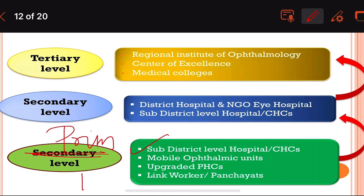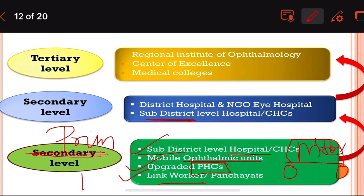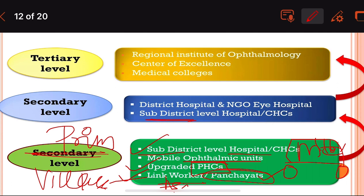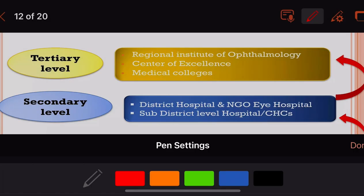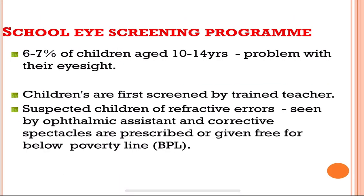At the primary level, we have the sub-district level hospital, mobile ophthalmic units, upgraded PHCs (primary health centers), and link workers or panchayats. Link workers are ASHA workers, operating at the village level.